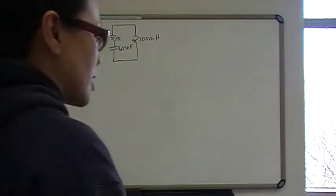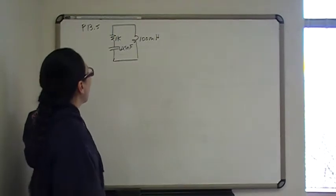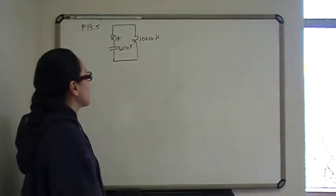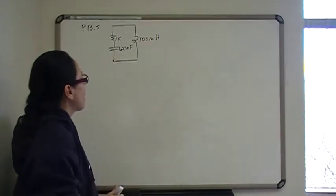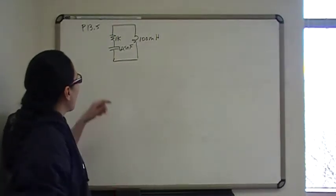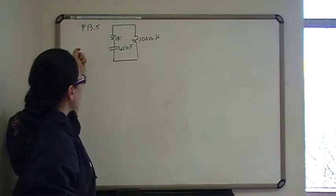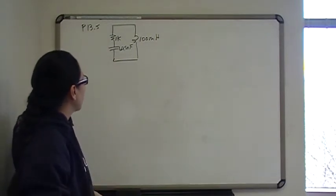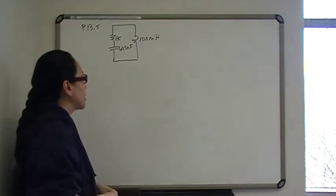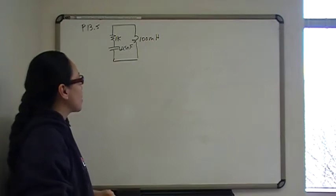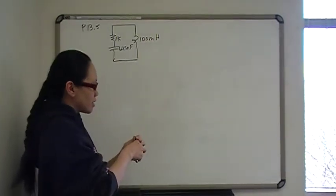Hi guys, so this problem is problem number 5 from chapter 13 on circuit analysis in the S domain. In this problem we're looking at a series connected 1k resistor with a 625 mF capacitor, and that is connected in parallel with a 100 mH inductor. And we're finding the S domain impedance, also zeros and poles. So let's get started.